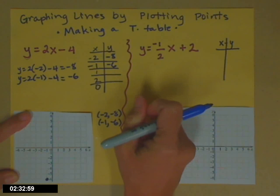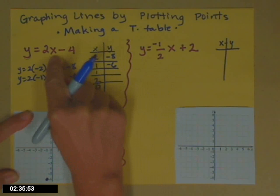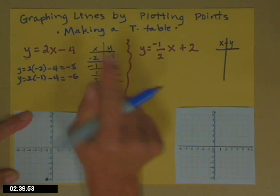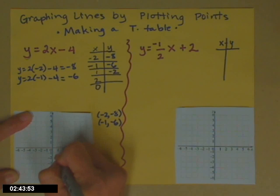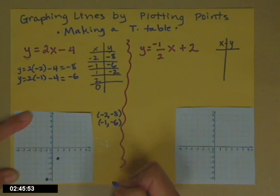If x is positive 1, can we do that one in our heads? x is positive 1, 2 times 1 is 2, minus 4, gives me a value of negative 2. So we'll go ahead and plot that one, 1, negative 2.